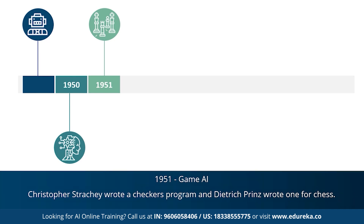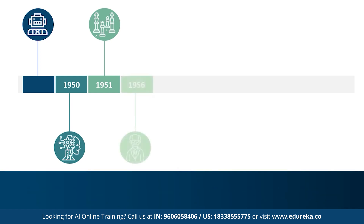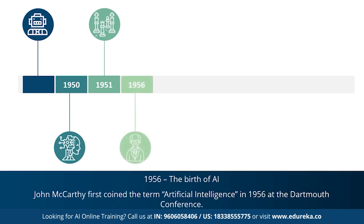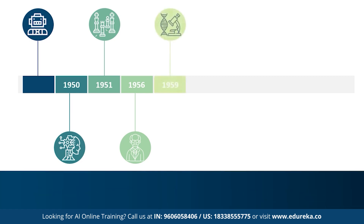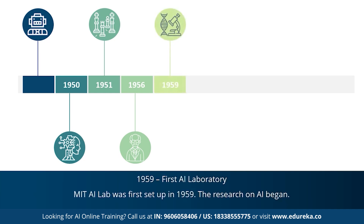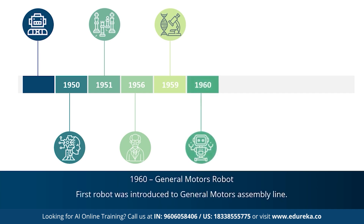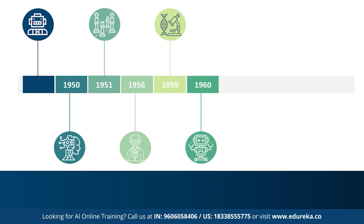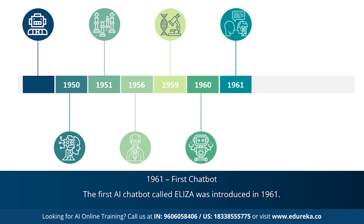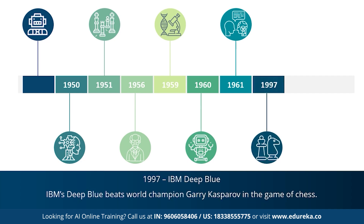Those programs were later rewritten and improved. 1956 marked the most important year for artificial intelligence — John McCarthy first coined the term artificial intelligence. This was followed by the first AI laboratory set up in 1959. MIT AI lab was the first setup dedicated to AI research. In 1960, the first robot was introduced to the General Motors assembly line. In 1961, the first AI chatbot called Eliza was introduced. In 1997, IBM's Deep Blue beat world chess champion Garry Kasparov.